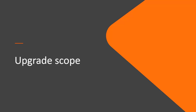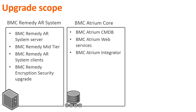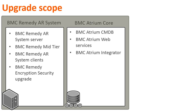Suite upgrade is essentially the upgrade of all the components included in the BMC Remedy ITSM Suite. The BMC Remedy AR System upgrade includes the upgrade of the BMC Remedy AR System Server, BMC Remedy Mid-tier, BMC Remedy AR System Clients, and BMC Remedy Service Encryption Security. The suite upgrade also includes the upgrade of BMC Atrium Core, where you upgrade the BMC Atrium CMDB, BMC Atrium Web Services, and BMC Atrium Integrator. Together, the BMC Remedy AR System and BMC Atrium Core make the platform of the BMC Remedy ITSM Suite.